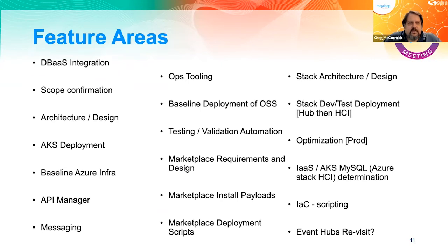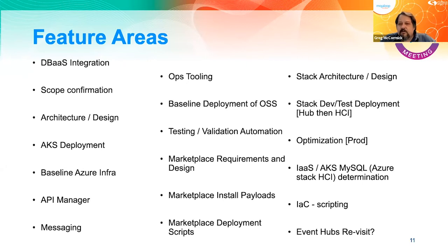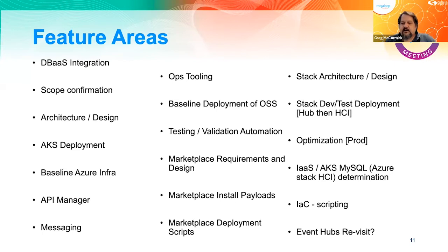Features include the database layer as a service, scope confirmation, architecture and design, AKS work, CAIDs work, baseline Azure infrastructure, API manager messaging, ops tooling, baseline OSS deployment, testing validation, marketplace requirements and design, marketplace install payloads, deployment scripts (separate scripts for marketplace), stack architecture design, dev and test, and Event Hubs — specifically the HCI component that works differently. That work has been done but moved to the back. All optimization is ongoing, all IaC and AKS work is there, IAC scripting is all but done, and then we'll revisit Event Hubs.